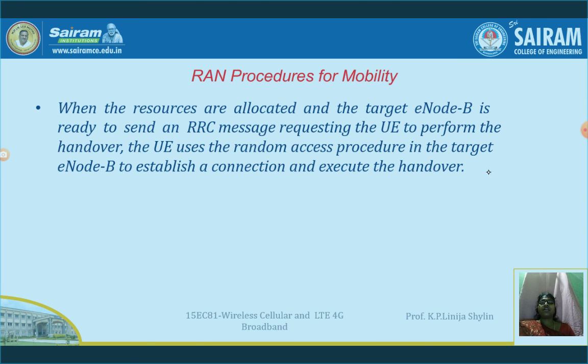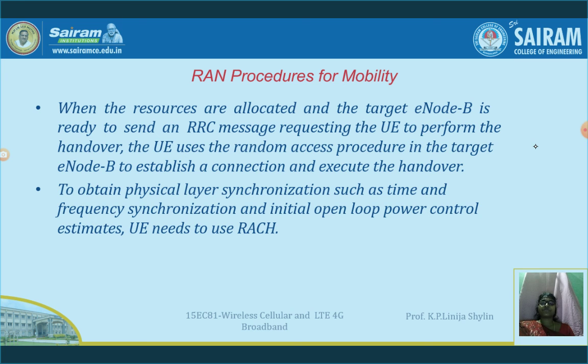Whenever the resources are allocated and the target eNodeB is ready to send an RRC message, the user equipment will use the random access procedure to establish the connection and execute the handover. Hope everybody can get a clear picture of the random access and radio access network procedures here. Thank you.